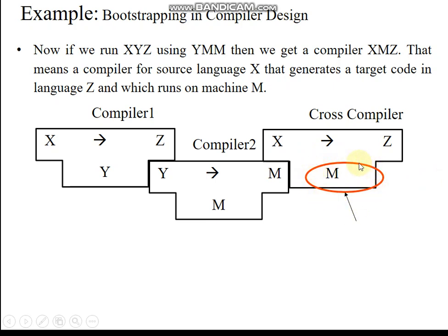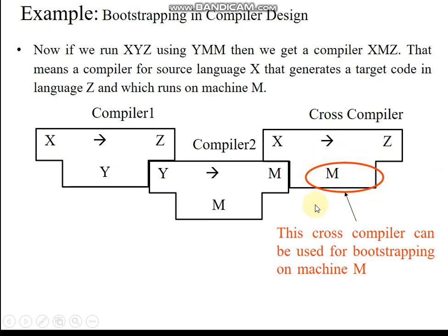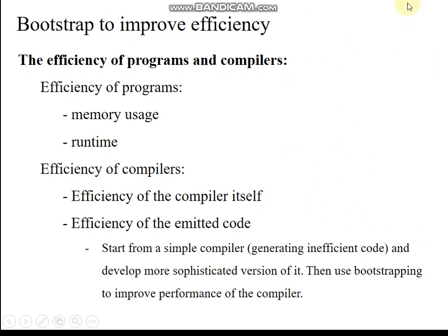This compiler is used for bootstrapping on machine M. Bootstrapping represents efficiency in terms of memory usage and runtime — that is, space complexity and time complexity. We start with a simple, inefficient set of programs and then use bootstrapping to progressively improve the compiler's performance in terms of both time complexity and space complexity.